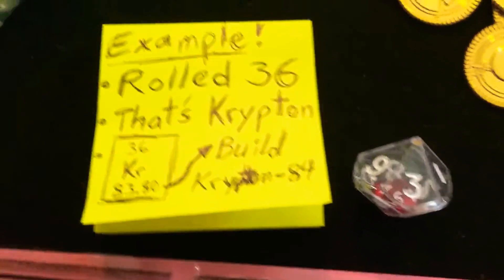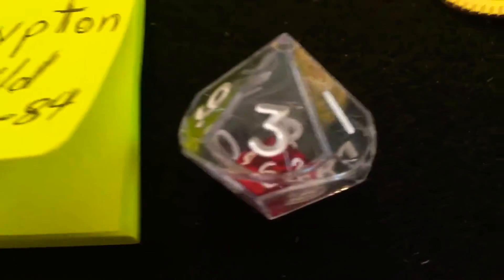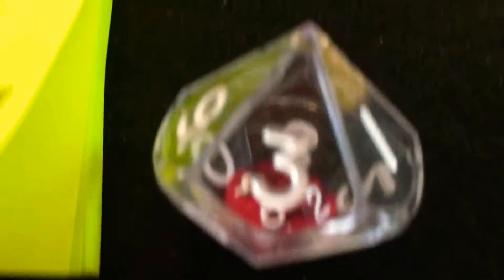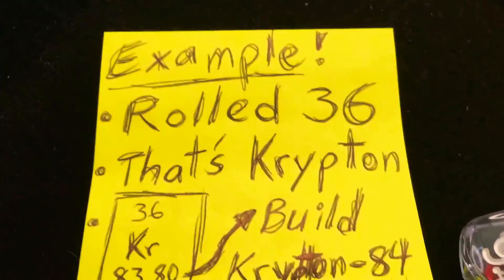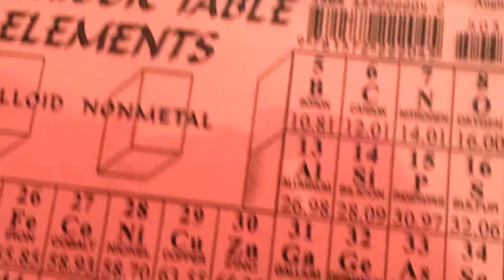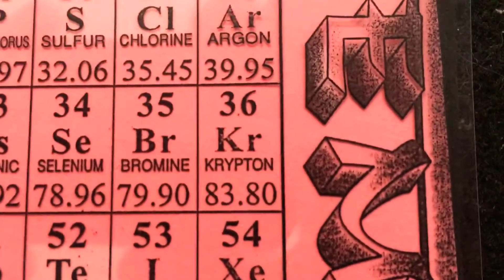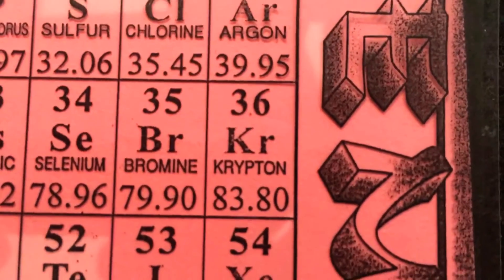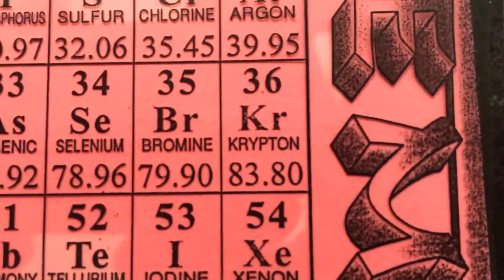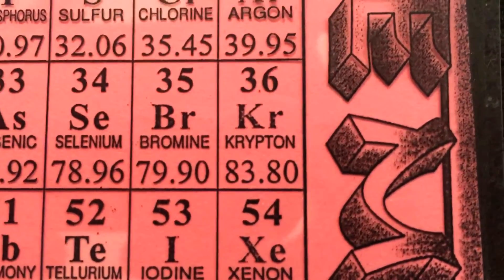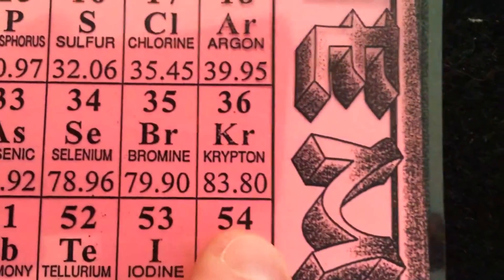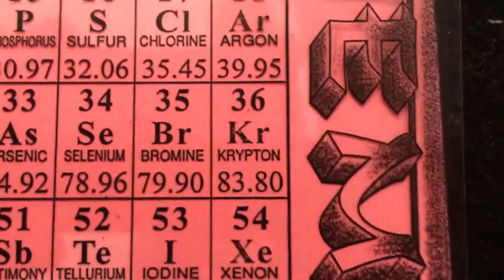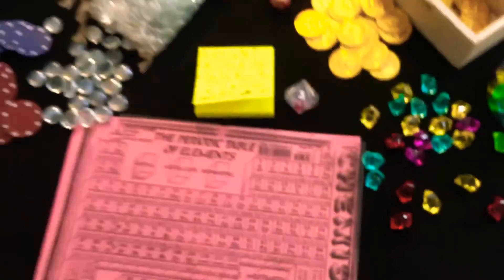Let's do an example — it's always helpful with an example. Let's say you roll this die and you get a 3 on the outside and a 6 on the inside. That would be a 36 result. That is element... Krypton. And now you're going to build Krypton 84. Krypton 84 is the isotope of Krypton that has a mass number closest to the atomic weight, which is on the bottom there, of 83.8.